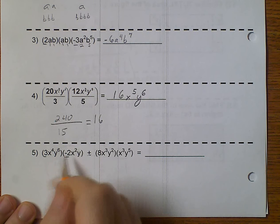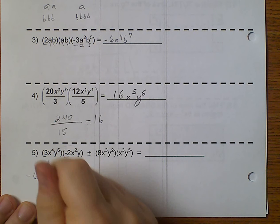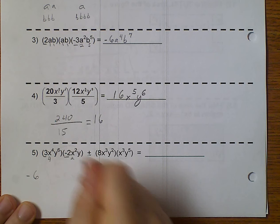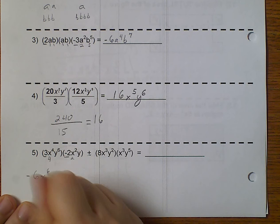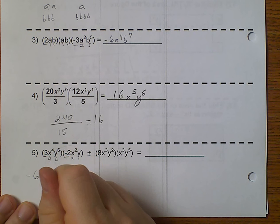3 times a negative 2. Well, that's a negative 6. x to the 4th, x squared, make x to the 6th. y to the 6th times 1, y. Or, y to the 1st is y to the 7th.